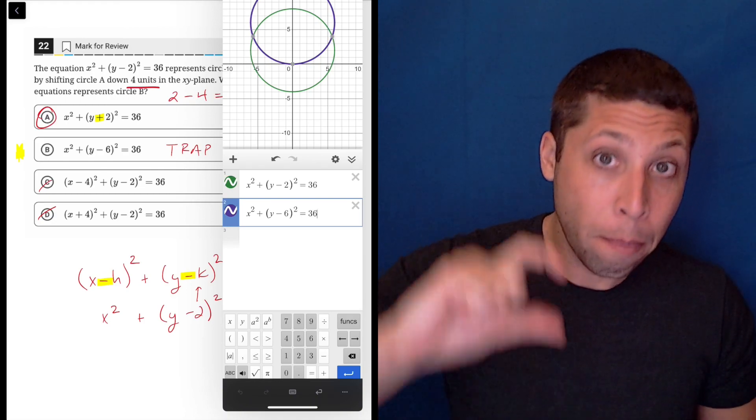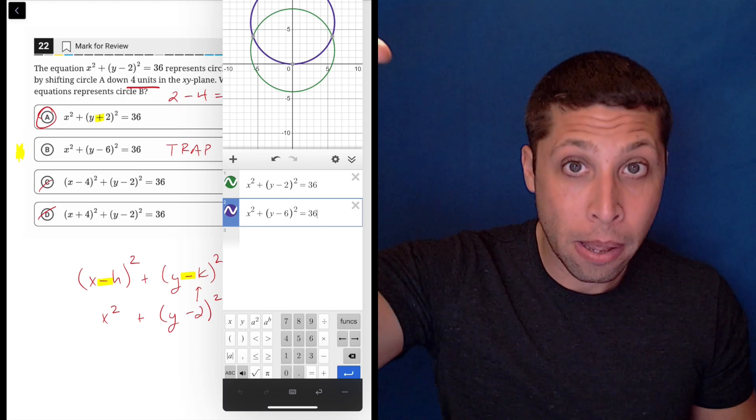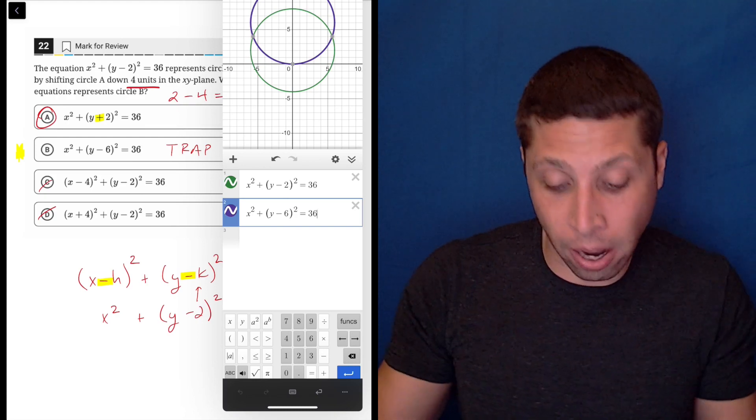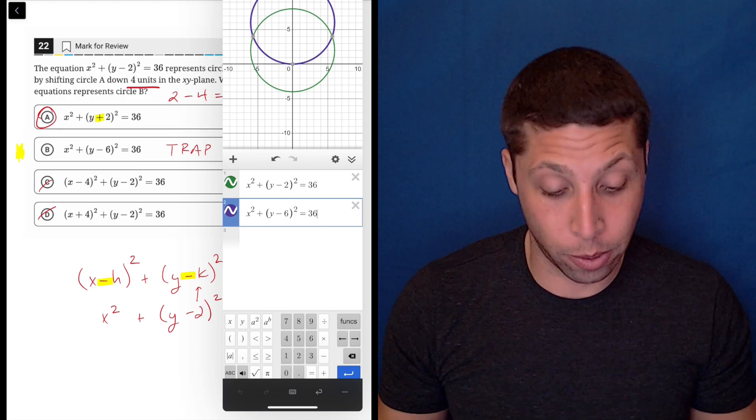But notice what happened. The purple is above the green. It moved up. So that's now proof that this is not right. It's supposed to move down 4 units.